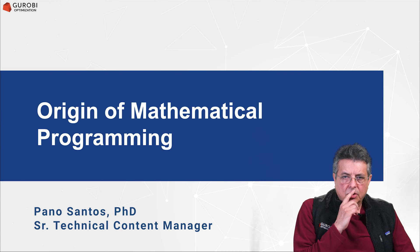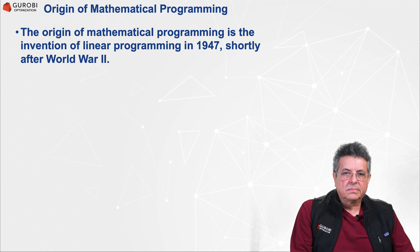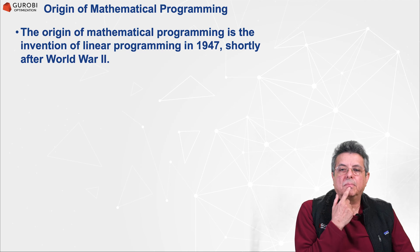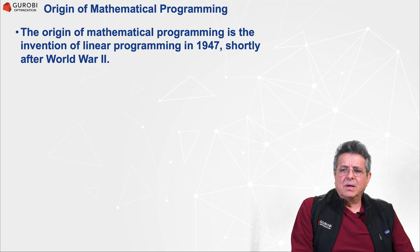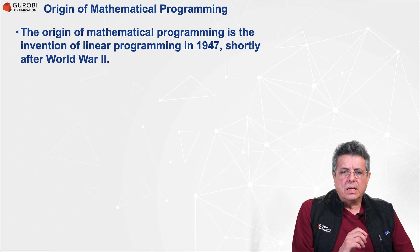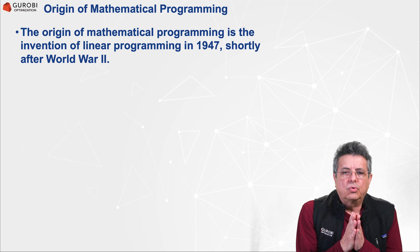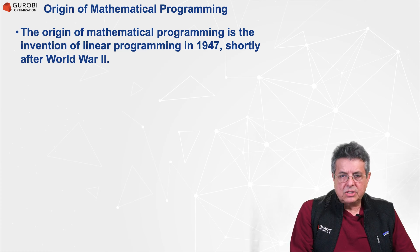Let's briefly talk about the origin of mathematical programming. Mathematical programming started with the invention of linear programming by George Danzig in 1947. George Danzig said that mathematical programming allows one to define general goals and to lay out a path of detailed decisions to make in order to best achieve these goals. So in a sense, mathematical programming entails three steps.